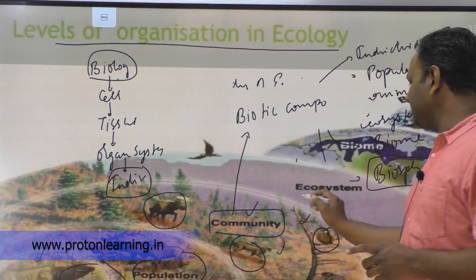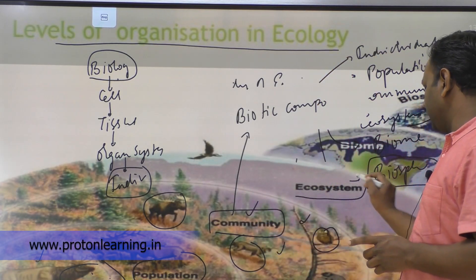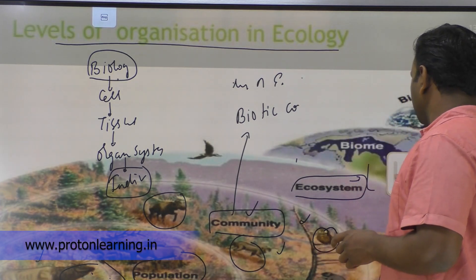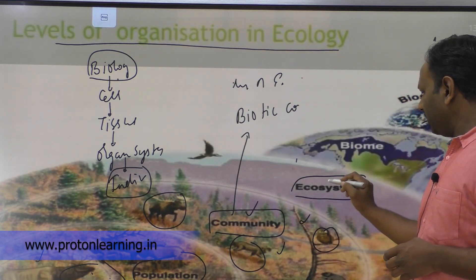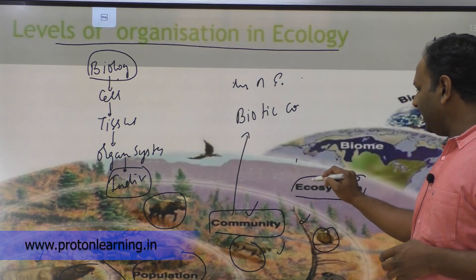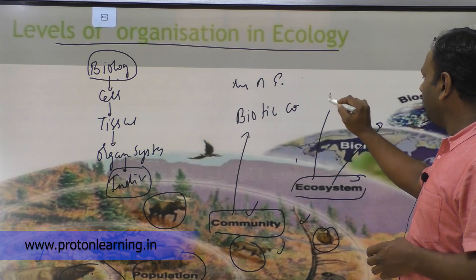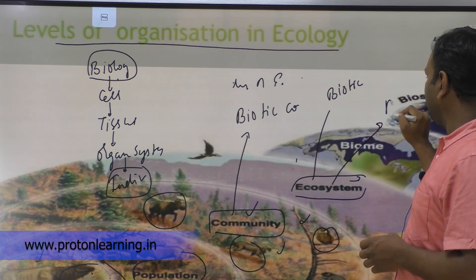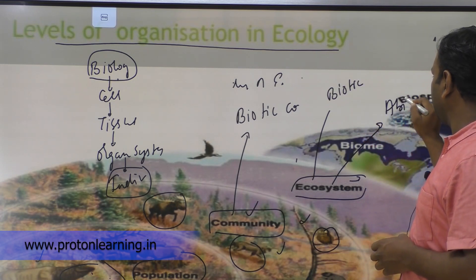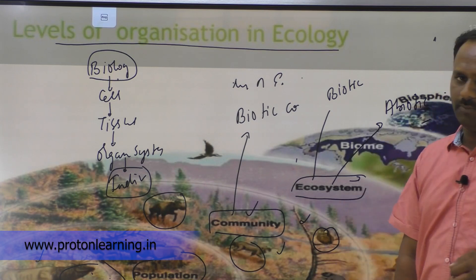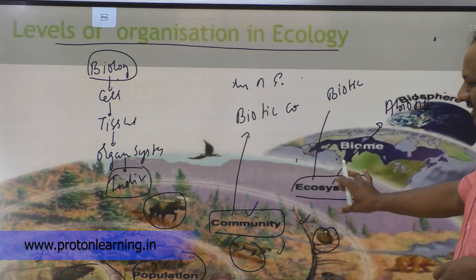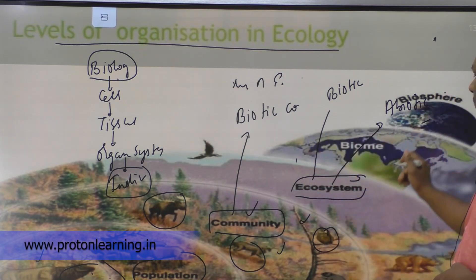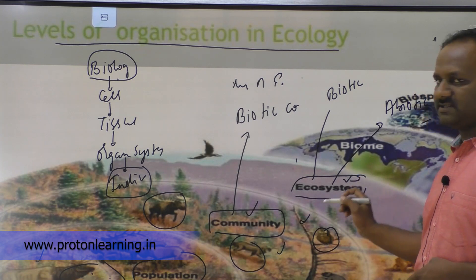Next one is ecosystem. So what is this ecosystem? Ecosystem is one particular area where biotic components plus abiotic components are present. So the area having biotic as well as abiotic components is called an ecosystem.